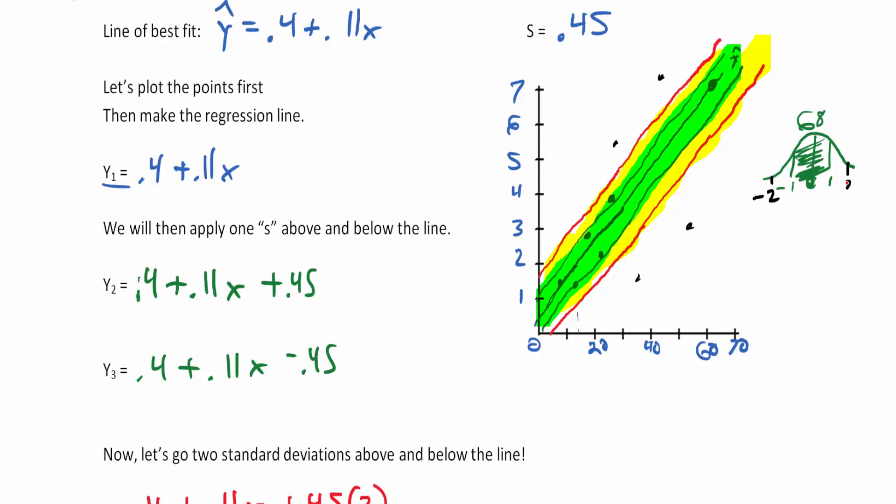We can determine outliers because they will exist two standard deviations away from that line of best fit. Here's a negative two, here's a two. Anything inside this green and yellow zone is 95% of the data thanks to the empirical rule.